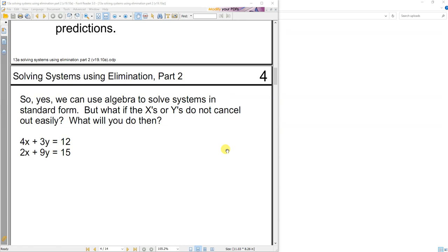So yes, we can use algebra to solve systems in standard form. But what if the x's or the y's do not cancel out easily? What will you do then?